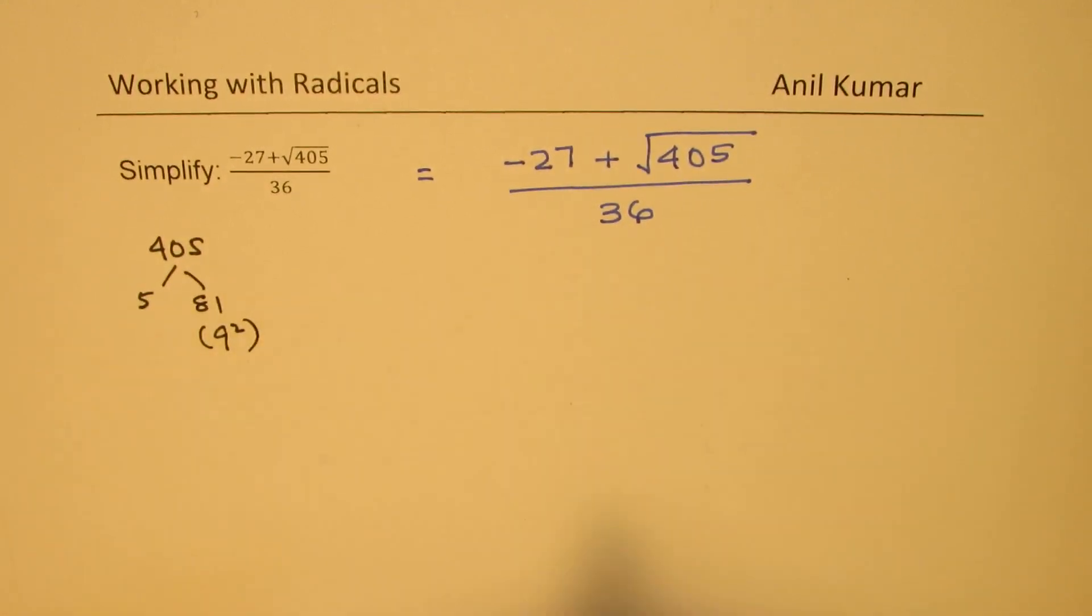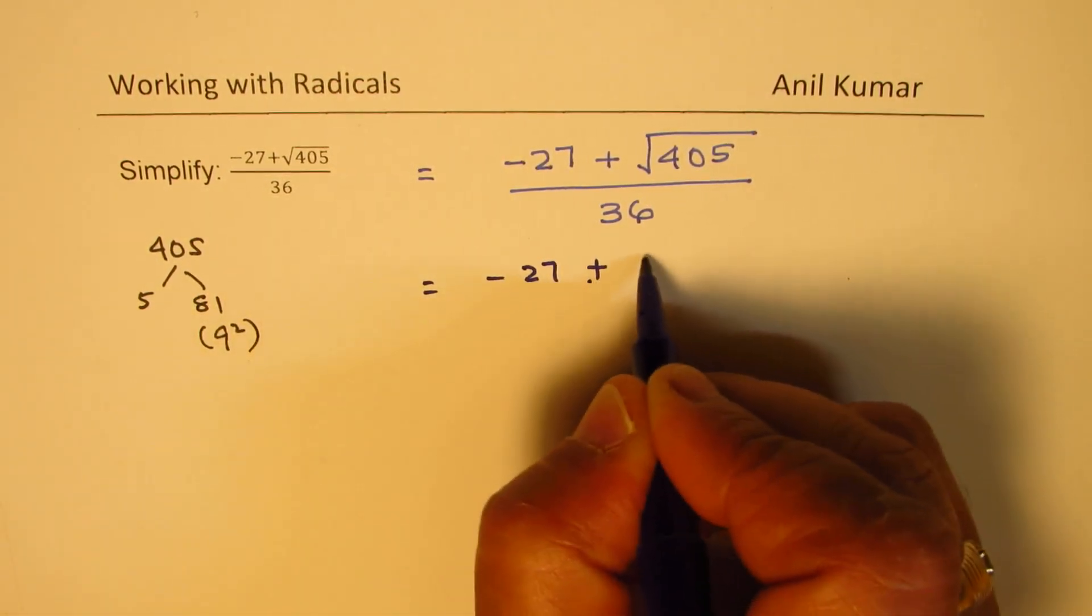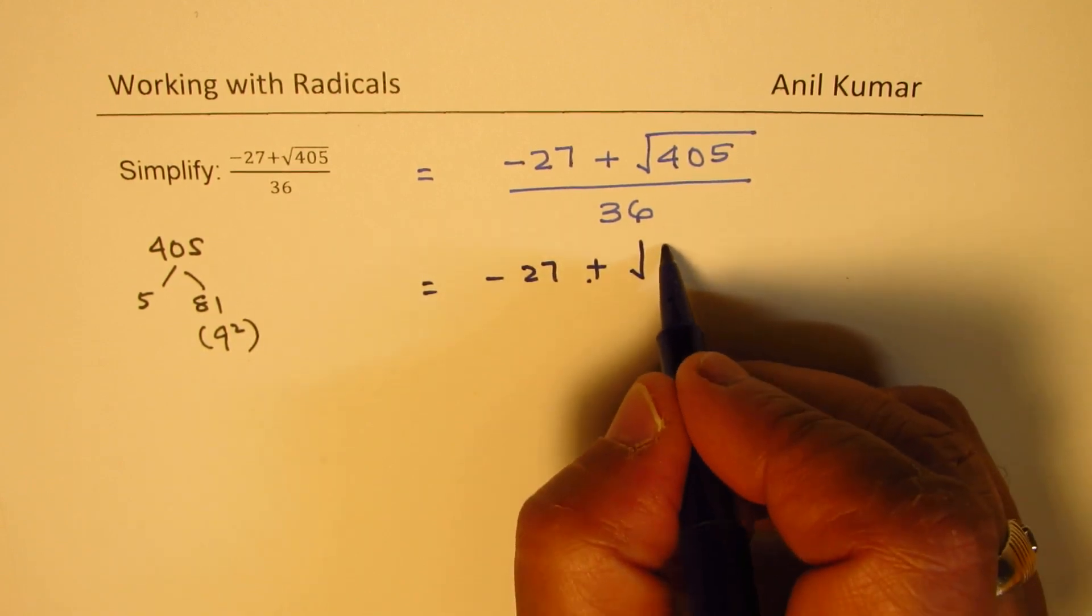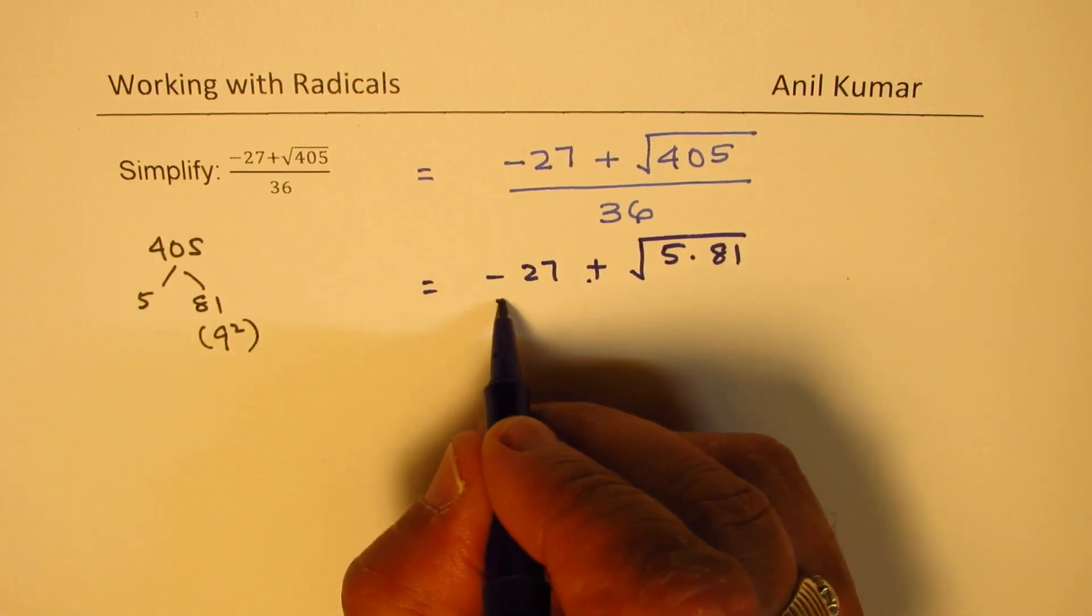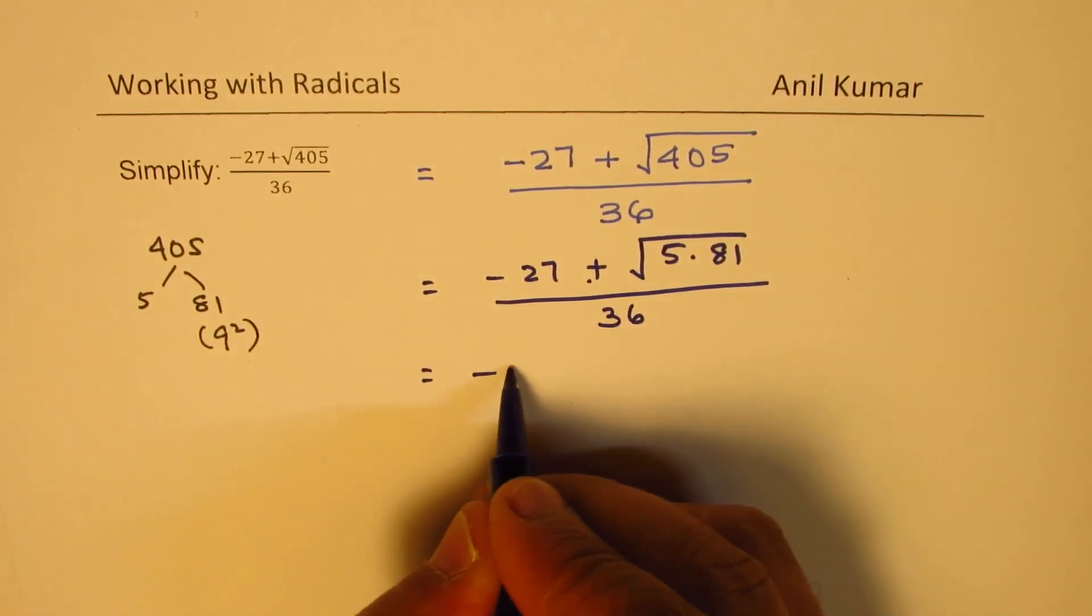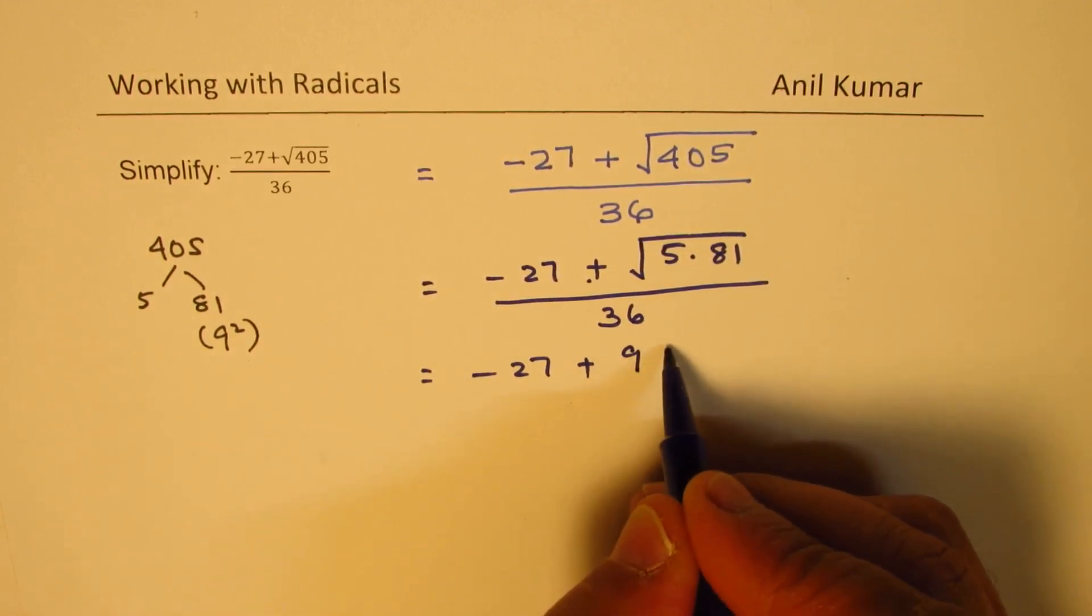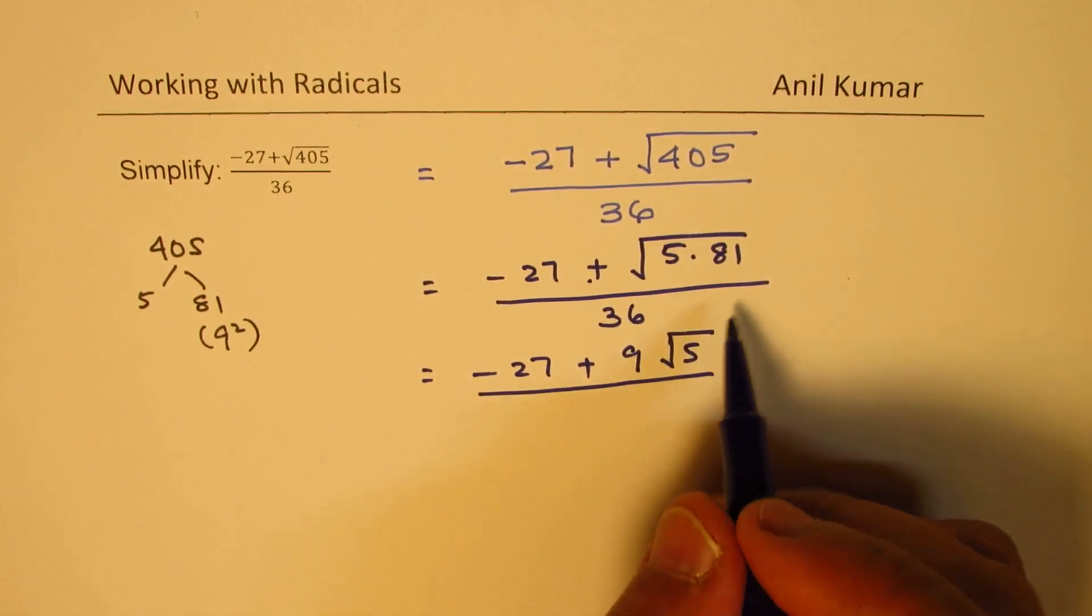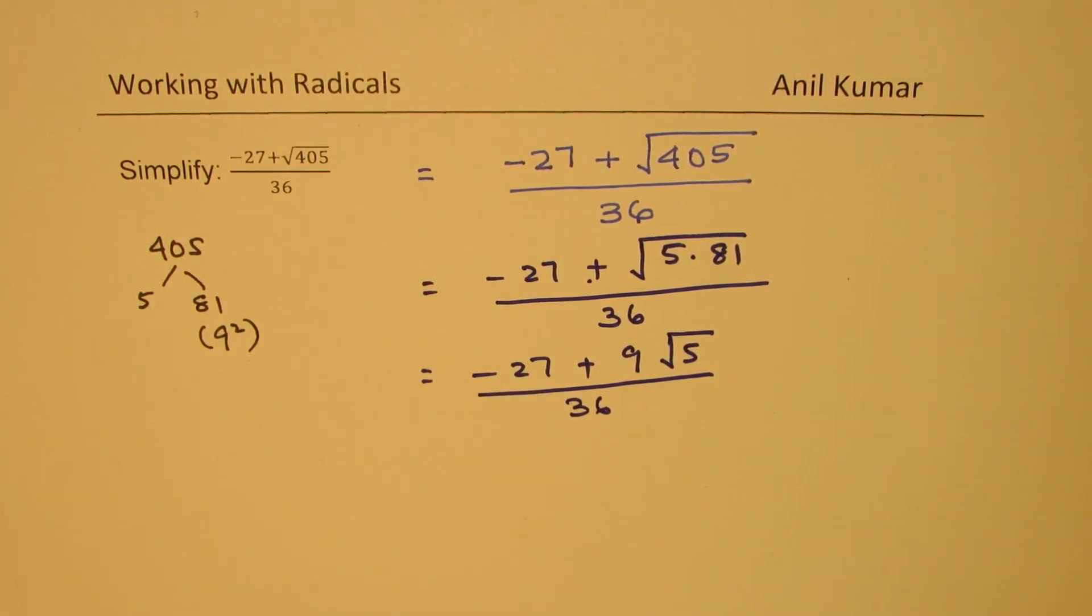So what I will do now is I will rewrite this expression as (-27 + √(5 times 81)) / 36, which is 9 square, which we have seen here, divided by 36. So that is equal to -27 plus, 81 is 9 square, so we should take away 9 outside and write √5. Is that clear? So it's not necessary to show inside and then take it out. You could actually do it directly.